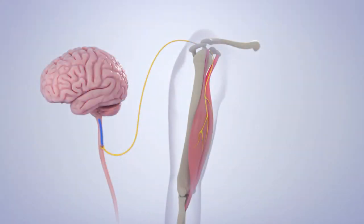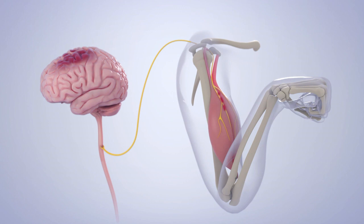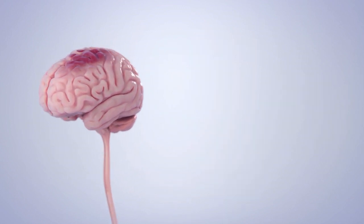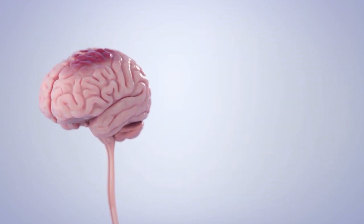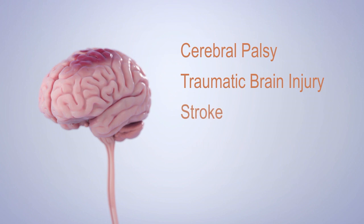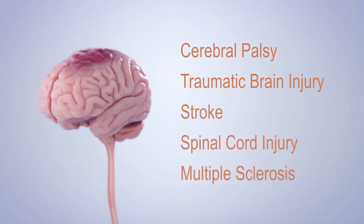Spasticity is caused by damage to nerves in the central nervous system that interrupt the normal pattern of reflexes, which in turn affects muscle contraction. Spasticity occurs in conditions that affect the brain and/or spinal cord, including cerebral palsy, traumatic brain injury, stroke, spinal cord injury, and multiple sclerosis.